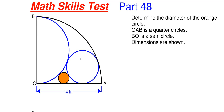So this will be our 48th part in this particular skill series. What we have going on here is we have to determine the diameter of this orange circle shown here. A little bit of information given: O, A, and B is a quarter circle. B to O is this semicircle shown in blue, and then this blue circle over here is a full circle. We are given that the radius of the quarter circle is four inches, thus the diameter of B to O for the semicircle is also four inches. We have to determine what the diameter of this little orange circle actually is.